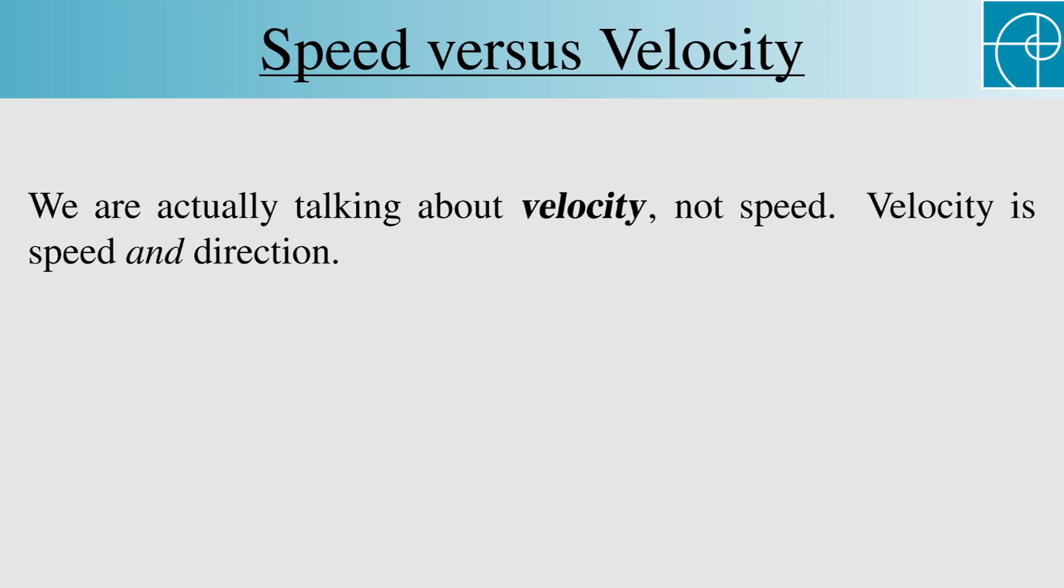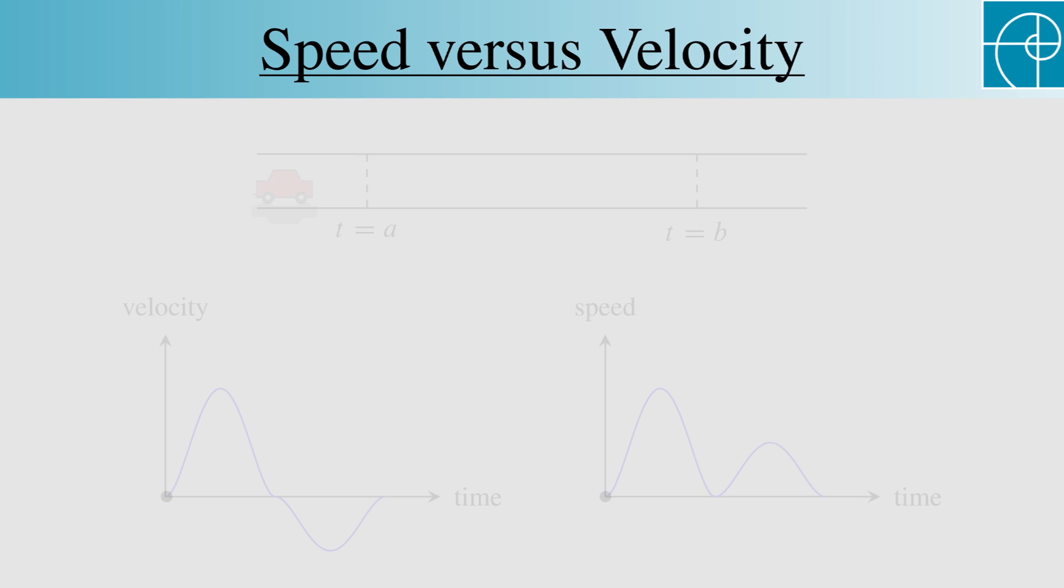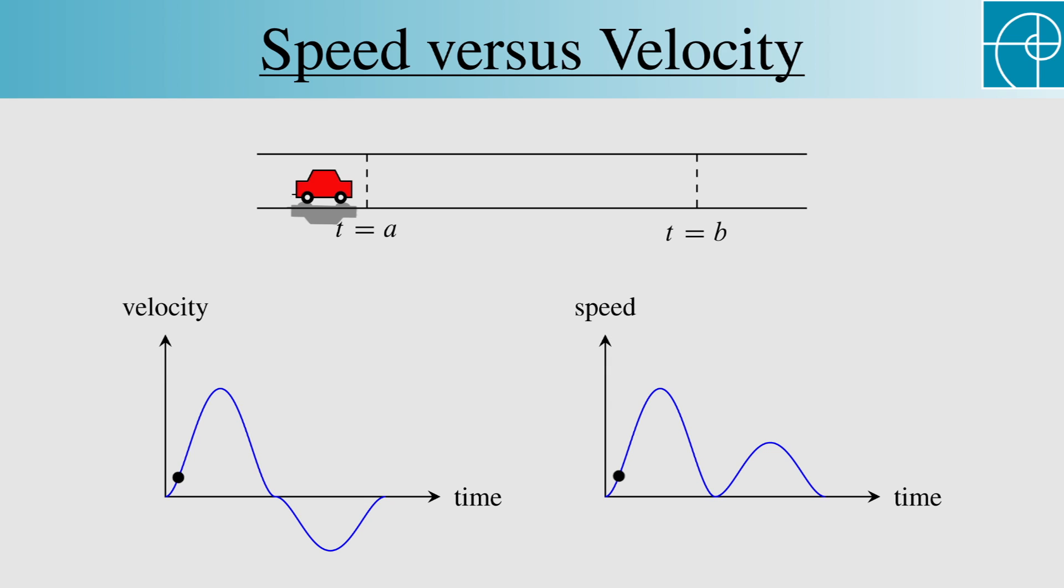Velocity is speed and direction. Let's suppose that the car moves forward for a bit and then moves backward. On the left is the graph of the velocity, which is positive while the car is moving forward and negative while it's moving backward. On the right is the graph of the speed, which is always positive. That's the graph of the speedometer readings.